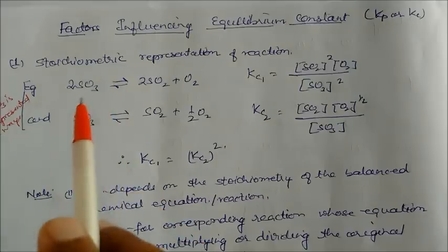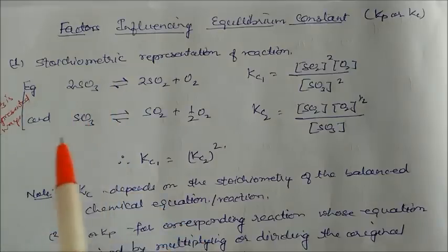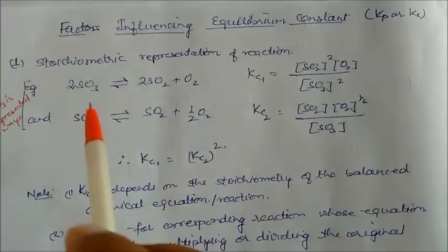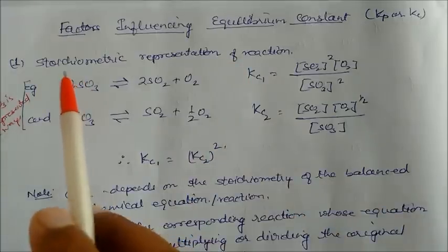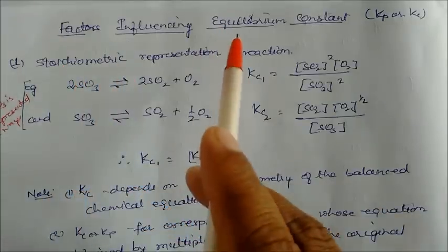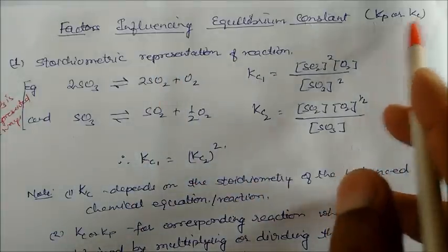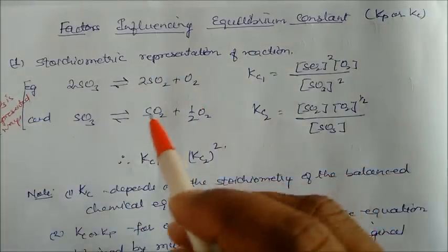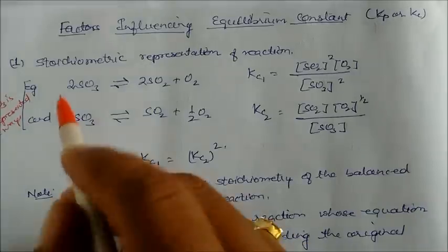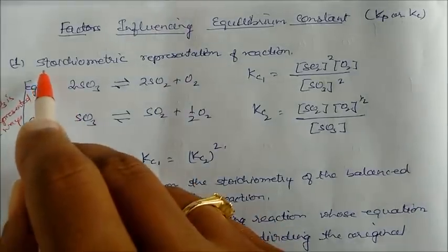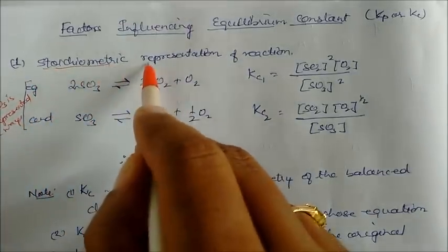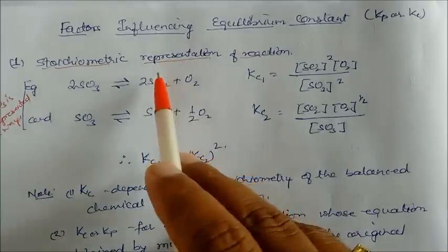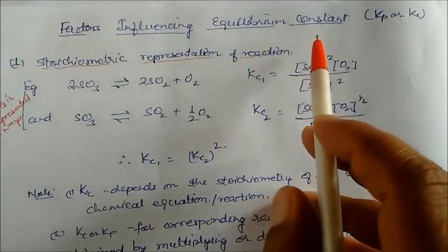Let us continue this session of the lectures on chemical equilibrium. We will discuss the factors affecting the chemical equilibrium constants, that is Kp or Kc, and how they are affected by different factors. One factor is the stoichiometric representation of reactions, which can affect the equilibrium constant.